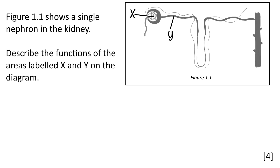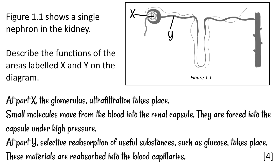Because this is a difficult topic, it's a place where people can easily lose marks in exams. Let's look at a possible question: 'The diagram shows a single nephron in the kidney. Describe the functions of the areas labelled X and Y.' X is the glomerulus and Y is the tubule. At part X, ultrafiltration takes place — always name the process. Small molecules move from the blood into the renal capsule, forced in under high pressure. At part Y, selective reabsorption of useful molecules takes place — notice selective reabsorption, not absorption, or you'll lose marks. Give an example such as glucose, and state that these materials are reabsorbed into the blood capillary.